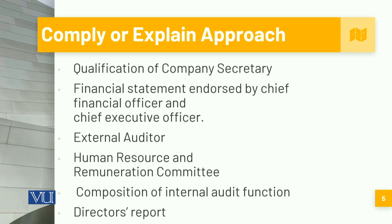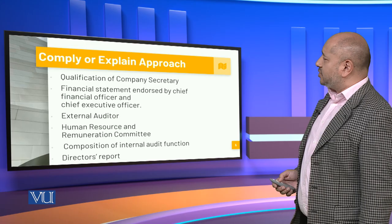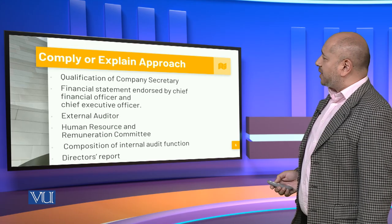The qualification of the company secretary has also been endorsed. The financial statement has to be endorsed by both the chief financial officer and the chief executive officer — both very important components. The role of the external auditor and how that is going to be established, the human resource and remuneration committee — all of it has to be across the board. The composition of the internal audit function has to be properly composed and postulated. And then we see the very important director's report, which has to be given by the chief executive and also by the board.